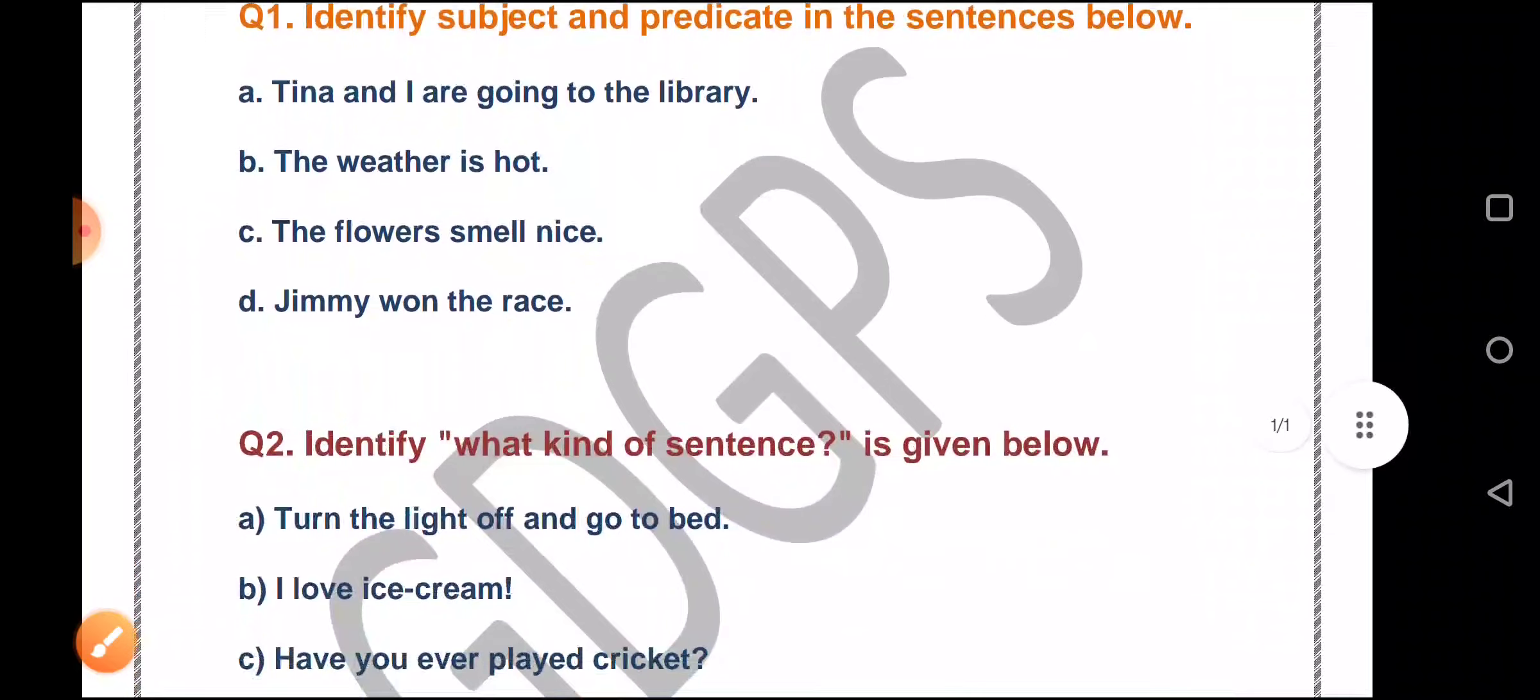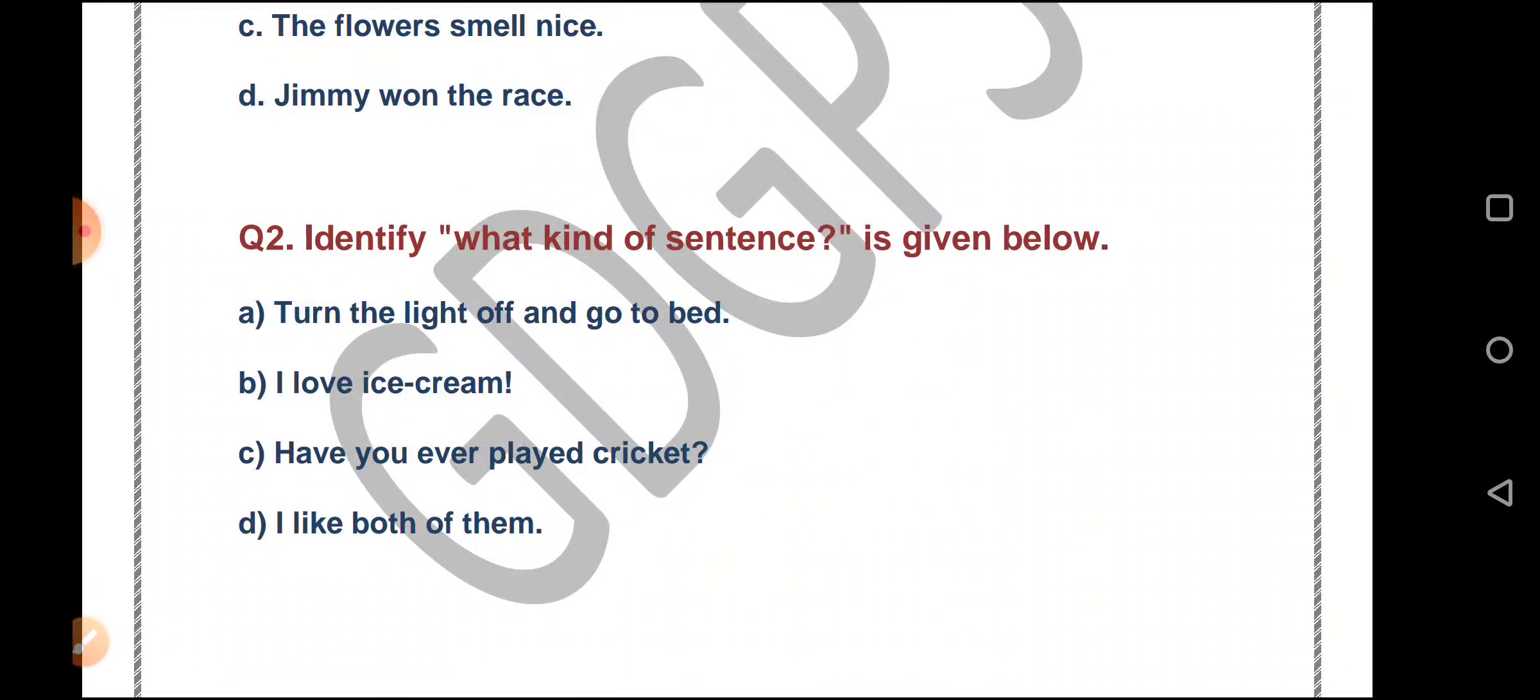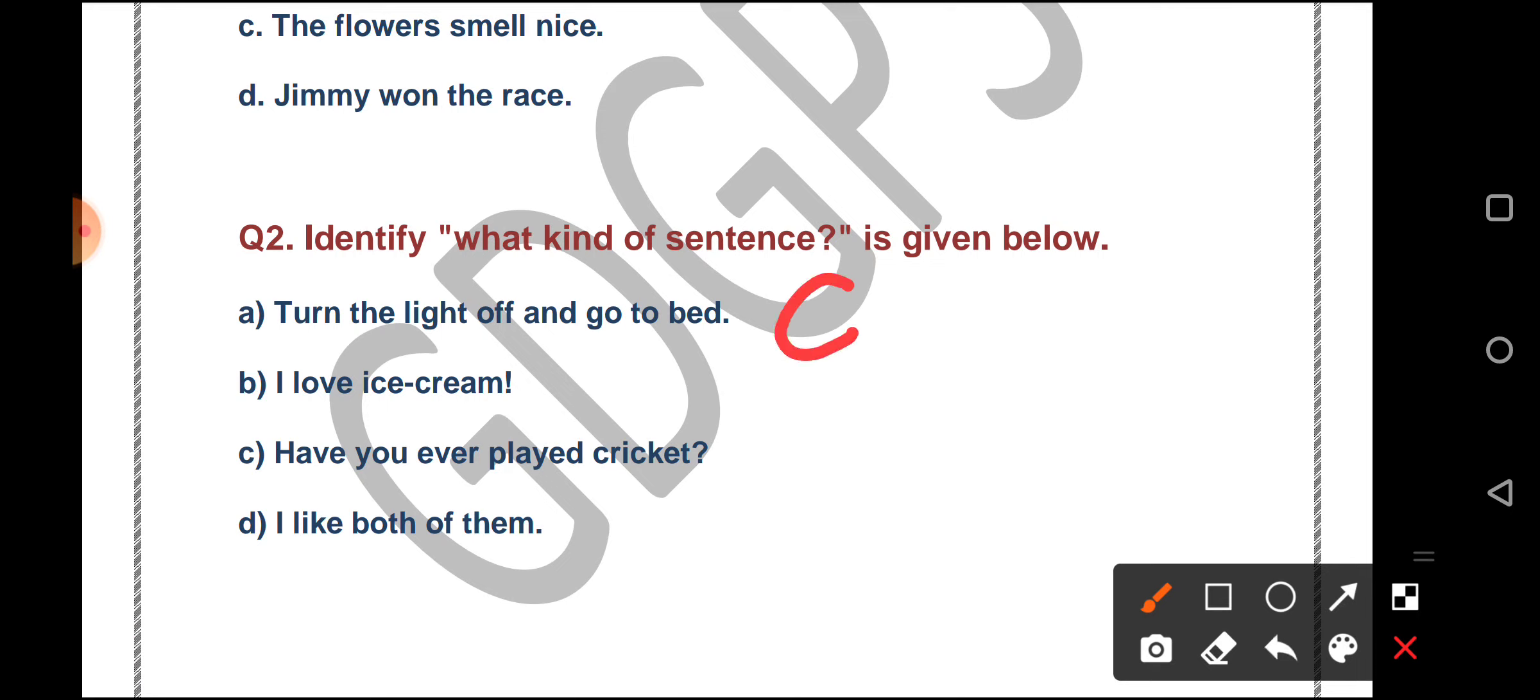Next, identify what kind of sentence is given below. Turn the light off and go to bed. What does it look like? Yes, it looks like the commanding sentence or the command sentence.